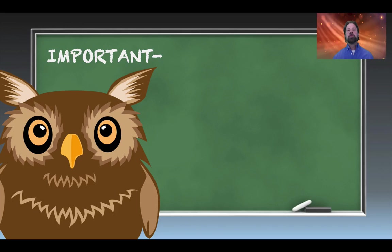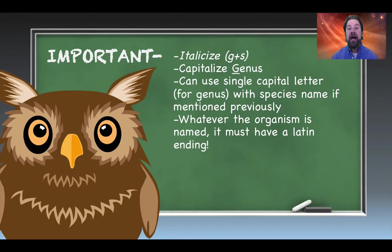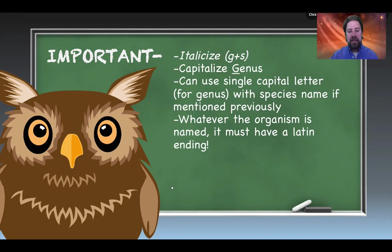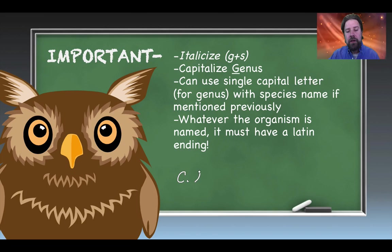When writing a species name, you should italicize both genus and species. Capitalize the genus name but leave the species name lowercase. After first use, you can abbreviate the genus to a single capital letter — for example, after writing Canis lupus, you can subsequently write C. lupus throughout the rest of a report.